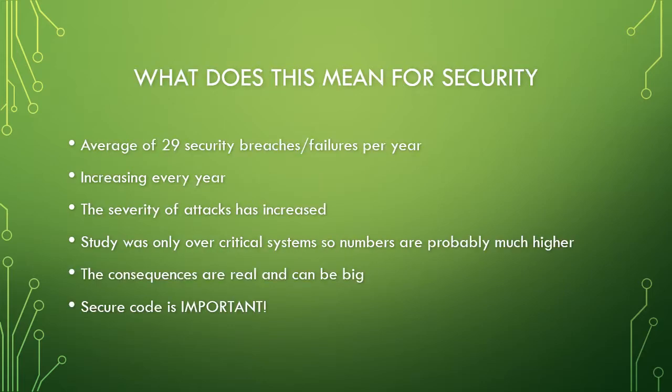What does this mean for security? There was an average of 29 security breaches or failures per year, and it's increasing every year with severity increasing as well. Even though 29 was the average, the number was actually quite higher because it started very low at the beginning of the study and increased every single year, going up to quite a high number. Also important: this study was only over critical systems, so the numbers are probably much larger if you consider all of technology or all businesses. This is why secure code is important — attacks are increasing per year in both frequency and severity, and the consequences can be very significant.